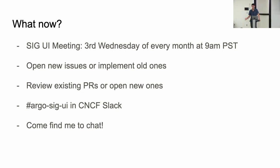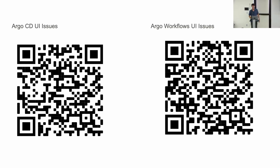Here are QR codes to UI issues — there's a UI label in Argo CD and in Argo Workflows for issues specific to the UI. Feel free to scan these. Thank you.